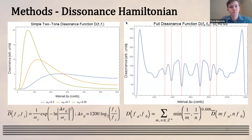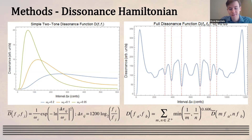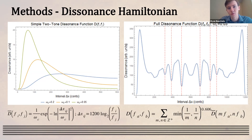To do any of this, we need to numerically formulate the dissonance Hamiltonian. This was first formulated experimentally by physicists Plomp and Levelt, and later the mathematician Sethares parametrized these into mathematical functions. On the left is a simple two-tone dissonance function — the distance between a fundamental note and a higher pitch, as a function of pitch interval ΔX in cents. For four different values of the critical bandwidth parameter ω_C, the function has a different shape — a peak then decay — with position and width set by ω_C. It corresponds to the smallest pitch interval distinguishable as two different notes.